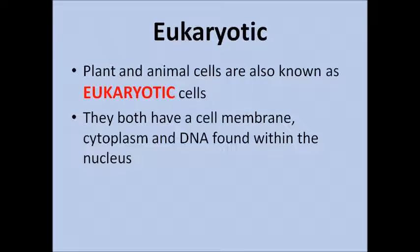Plant and animal cells are also called eukaryotic cells and you do need to learn this term. They both have a cell membrane, cytoplasm and the DNA is found within a nucleus.